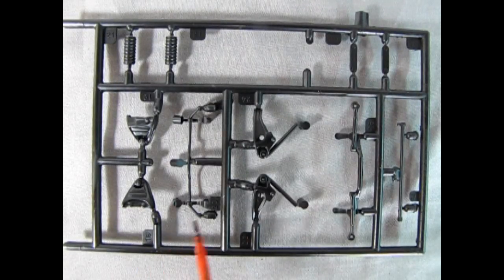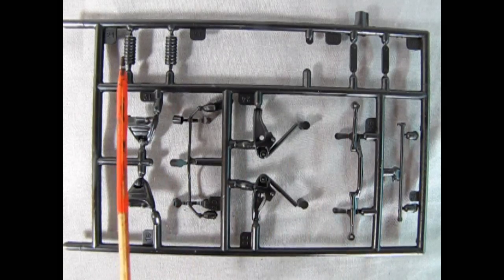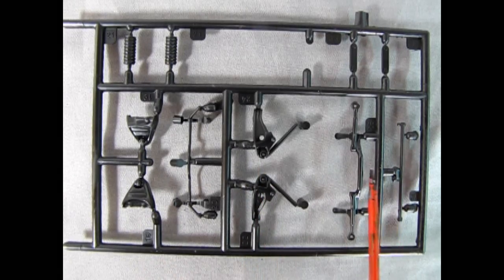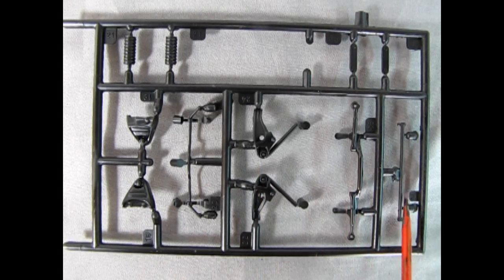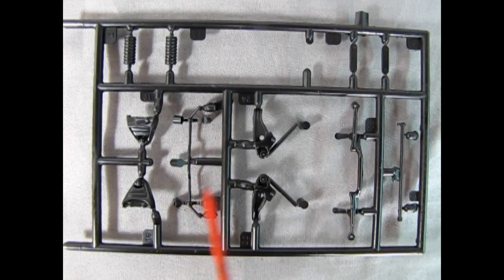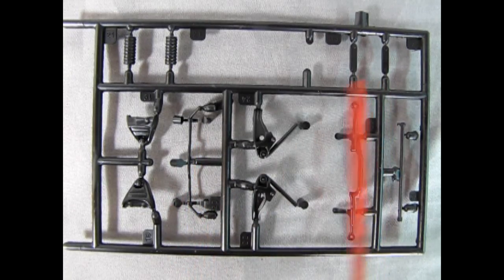This parts tree includes more suspension components. We have the coil springs, the front A arms, the lower A arms, as well as our tie rod and the rear brace and another radius rod up front and then the little supports for the rear axle.